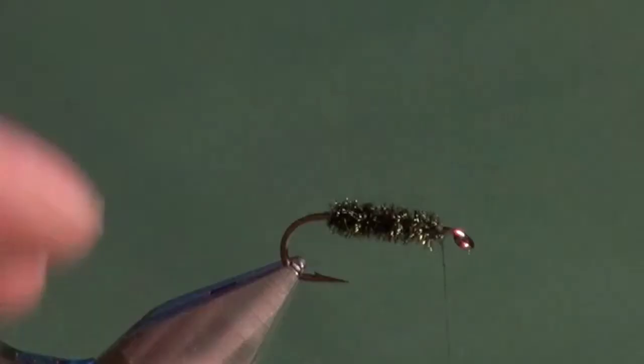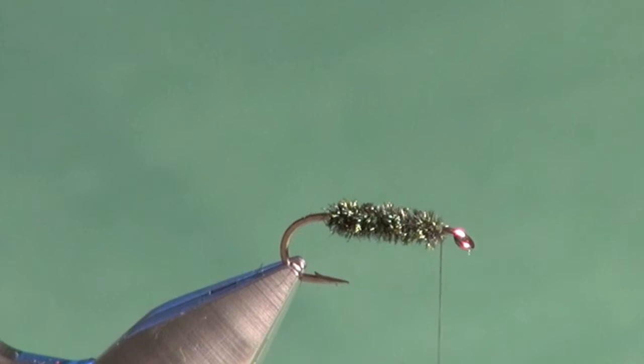And you can also do this technique with wire. You could form a dubbing loop out of wire and use exactly the same principle, and you'd have even a more stronger reinforced body. I often like just to counterwind the wire through the finished body.